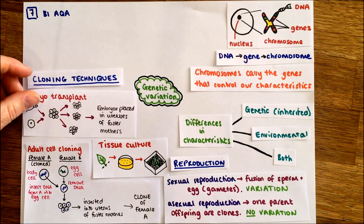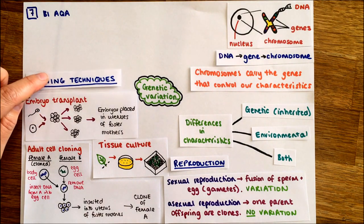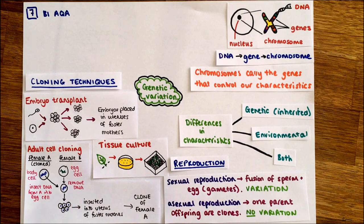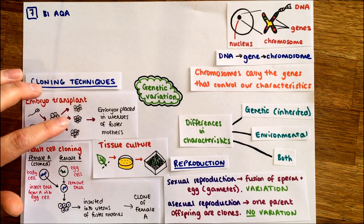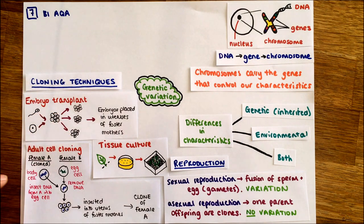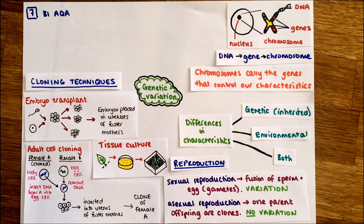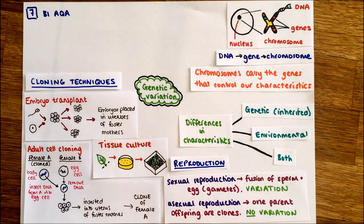The last cloning type is embryo transplants. We take one sperm and one egg from cattle, sheep, or similar animals, which fuse together in fertilization to create an embryo. That embryo is then divided into several embryos, and each is placed into a different surrogate mother who is prepared to receive it. They grow into calves or lambs, and when born they are all clones of each other, because they all came from a single embryo that was split - like creating identical twins but placing those embryos into different mothers.